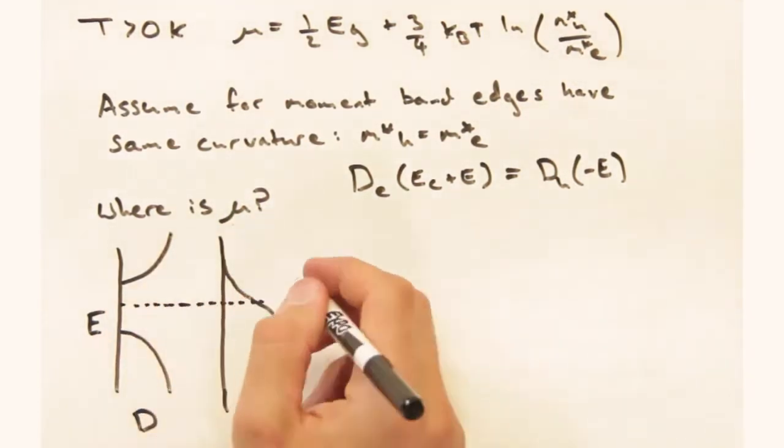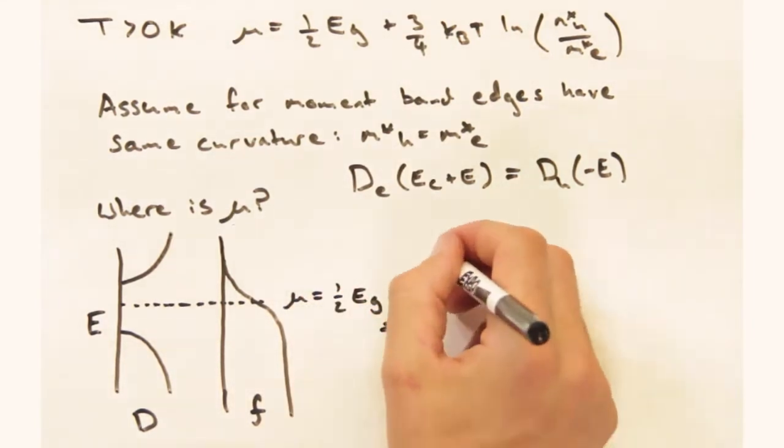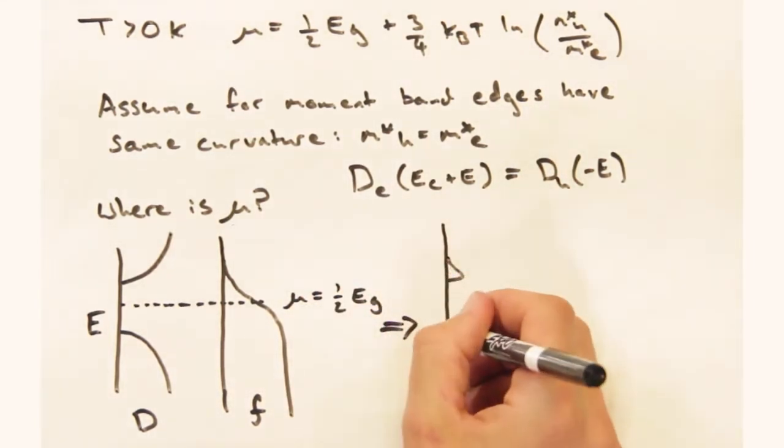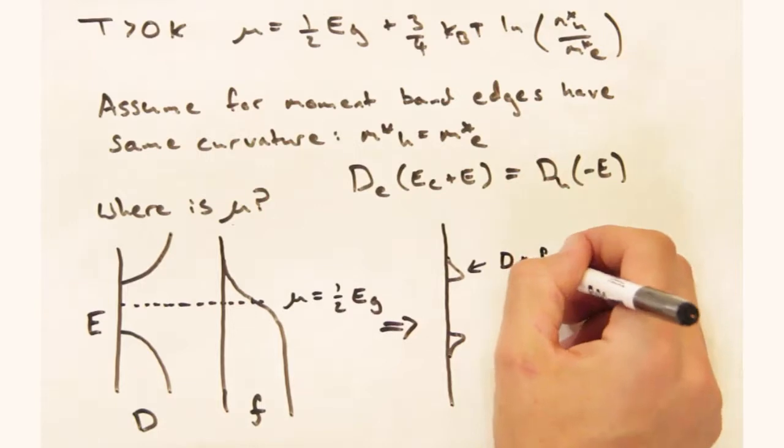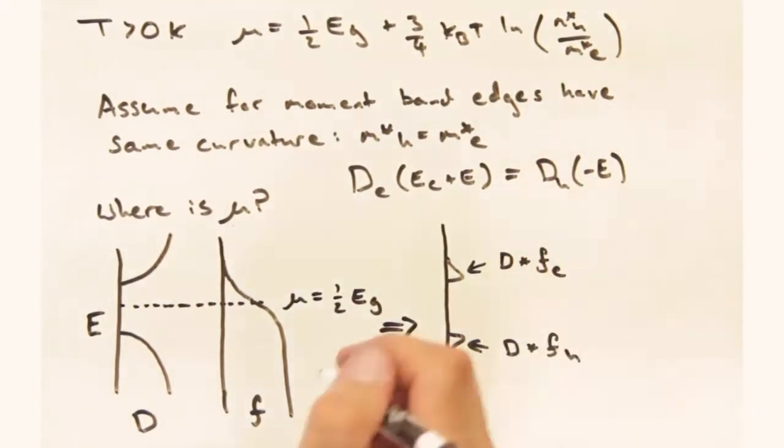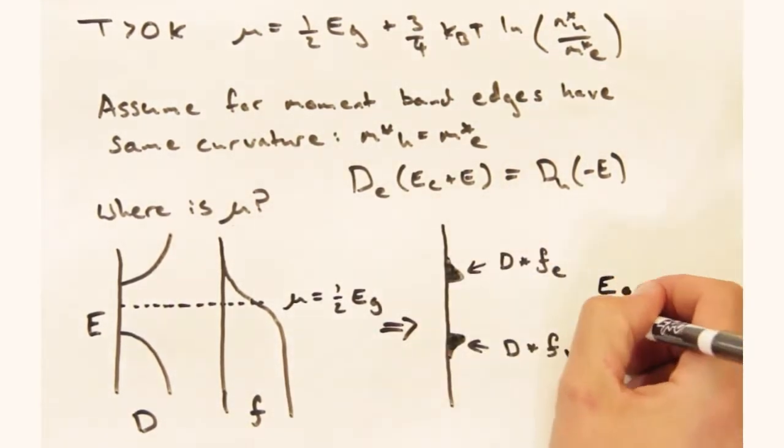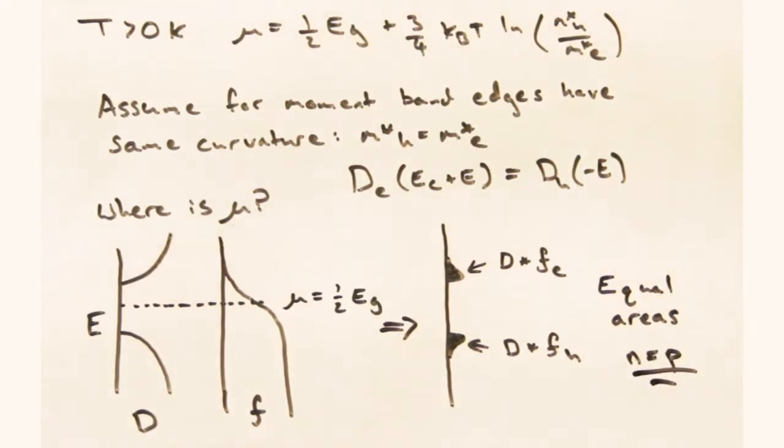I'd want to put it at a symmetric point so that the Fermi Dirac distribution in the conduction band equals the Fermi Dirac distribution in the valence band. So once again, we'll find it in the middle of the gap. And this is consistent with our expression since the natural log of one is zero.